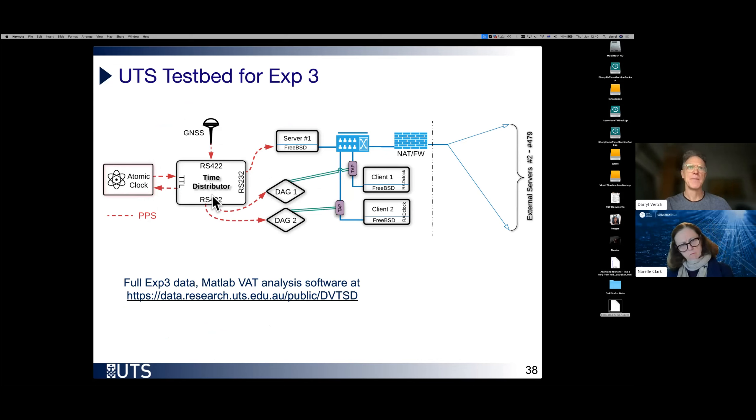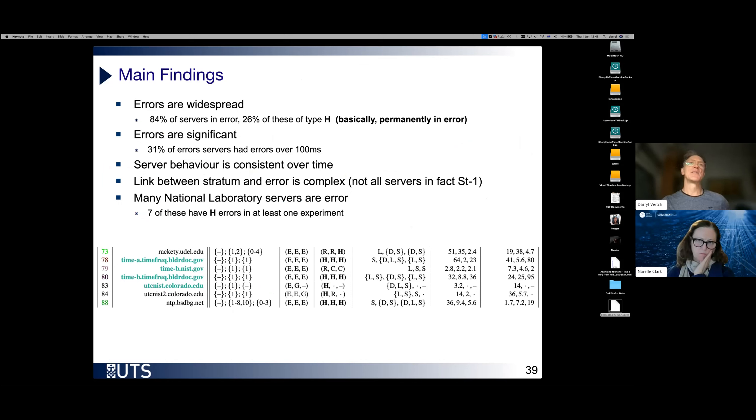So we do of course have a whole detailed paper telling you about the results. I can only come up with some main findings here. Errors are widespread. Of all the servers we looked at, 84% were caught being in error at least once. And sometimes they were very rare errors. In some cases they were very rare and very small. So it doesn't mean they're horrible servers. But in other cases, they're rare but large. In other cases, not rare but small. In other cases, not rare and not small. Everything.